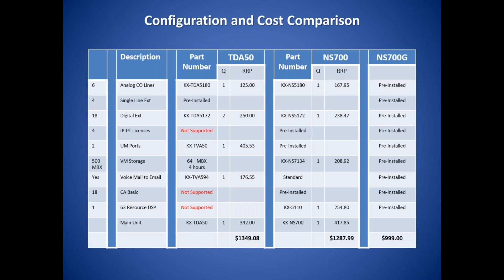The column on the left shows the pre-installed quantities of an NS700G. To provision the TDA50 to a similar configuration costs more, and the TDA50 does not include IP telephone licenses or support Communications Assistant. When the NS700 is configured as an NS700G, it costs more. The NS700G is the most cost-effective system in its pre-installed configuration in Panasonic's unified communications products. The NS700G also comes pre-built, requiring only initialization and registration.